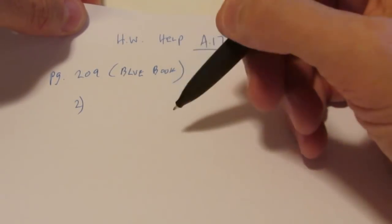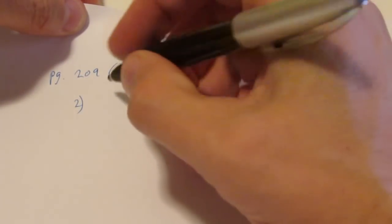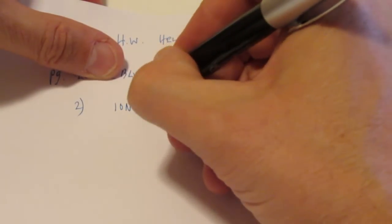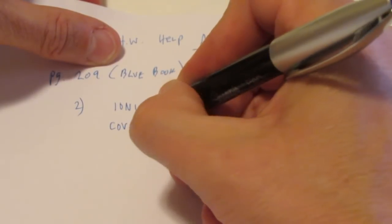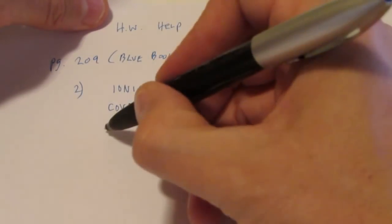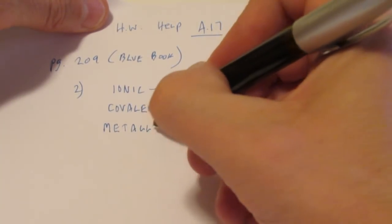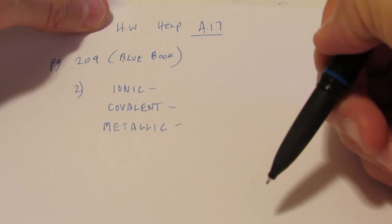Problem two says identify and define three major types of chemical bonding. Now we talked about two very specifically in class. Ionic was the first one we talked about. Then we talked about covalent. And one that we're not going to talk about for a bit yet, I'm going to give that one to you as well, is metallic. Now if you look in section one, you can get the definitions for each of these.